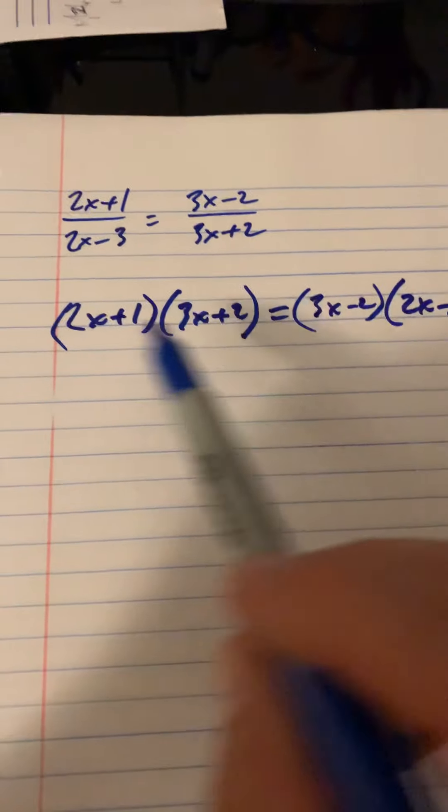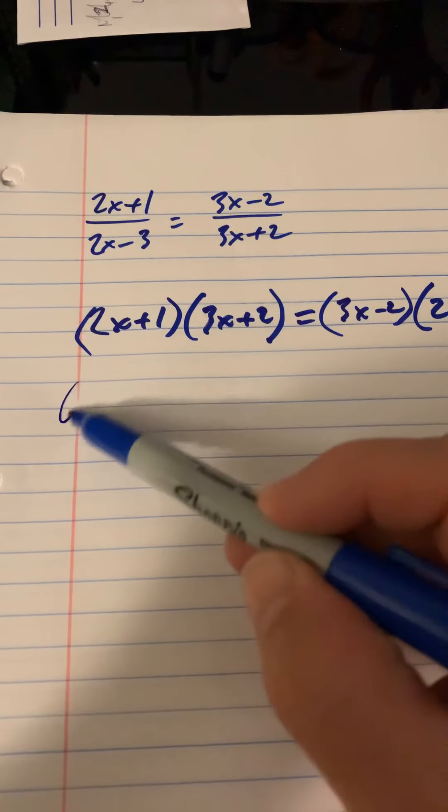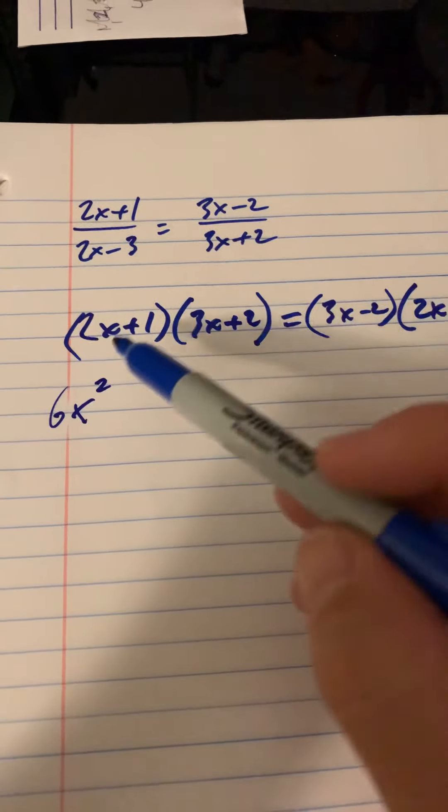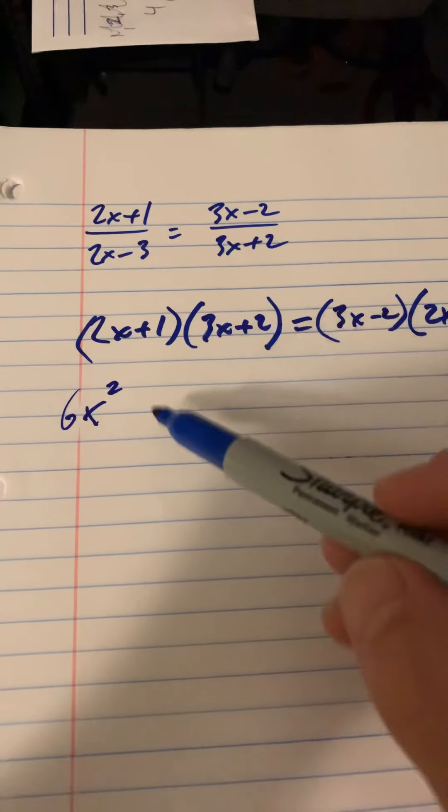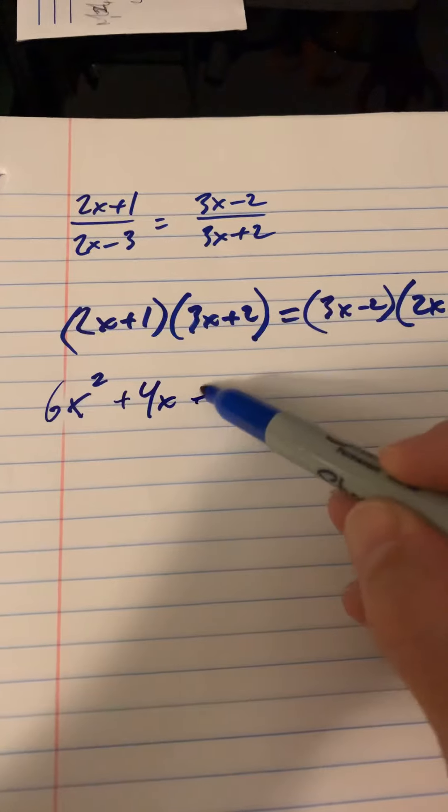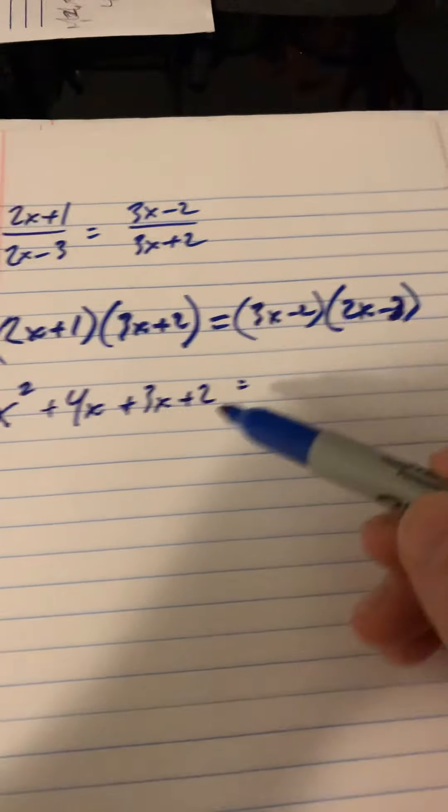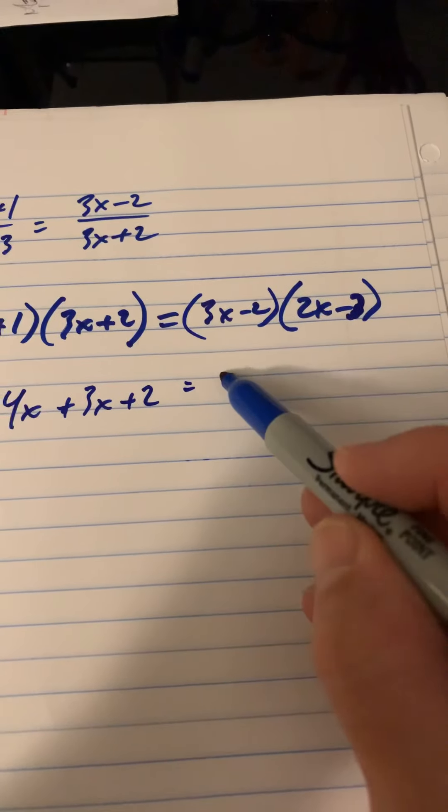Alright, so just go ahead and do the FOIL method, and that's going to give you 6x squared, and then plus 4x plus 3x plus 2 equals 6x squared.